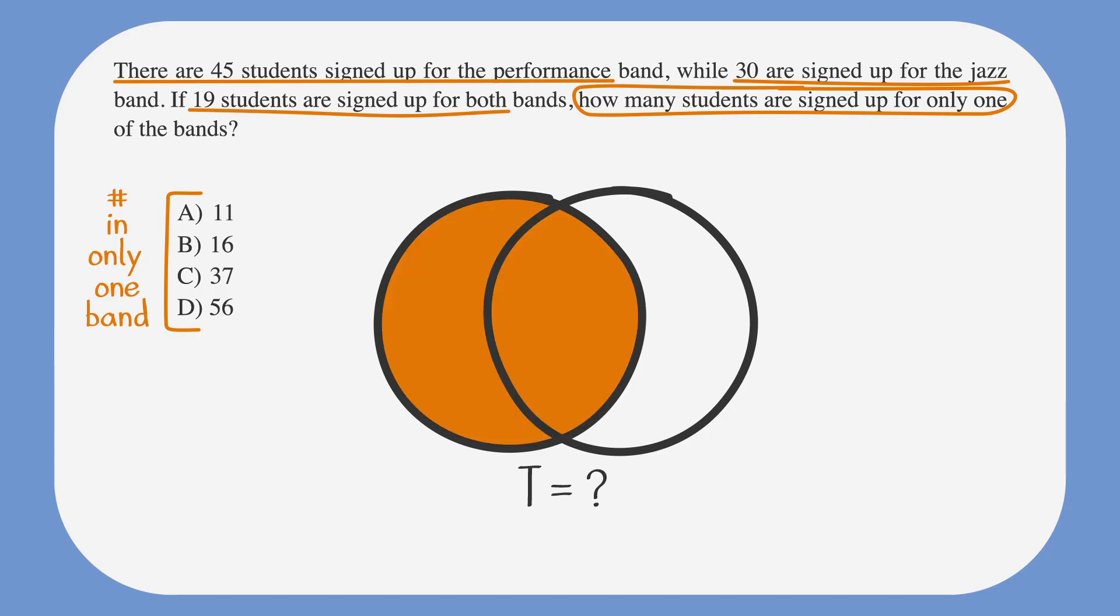The left circle is the total in the performance band. Let's label the fact that there are 45 performance band members. We can write this above the circle. And above the right circle, we'll note that there are 30 jazz band members.